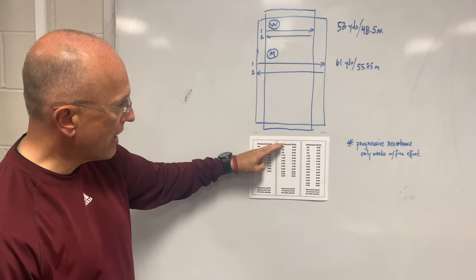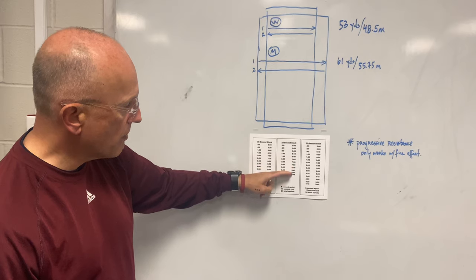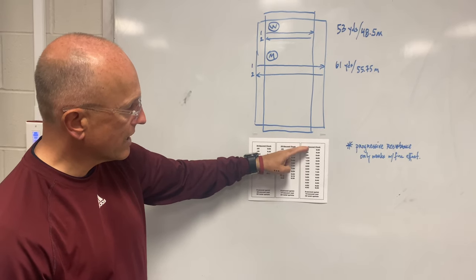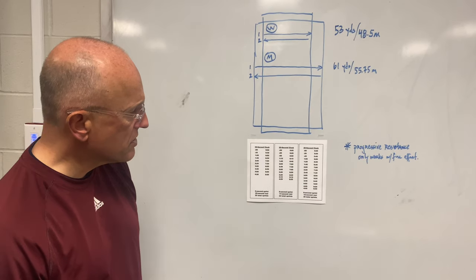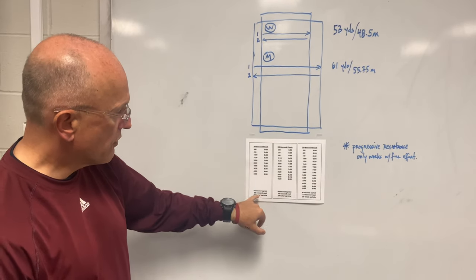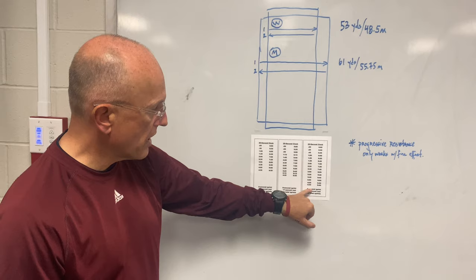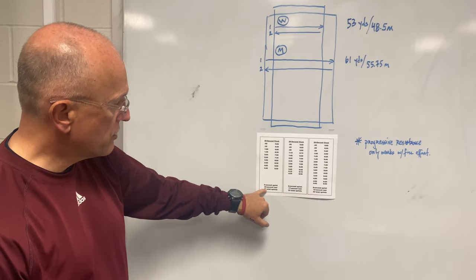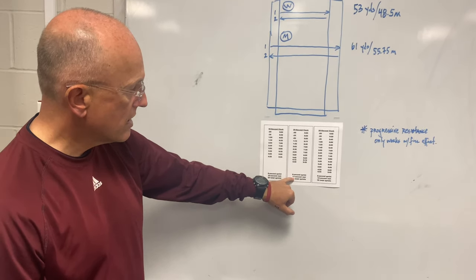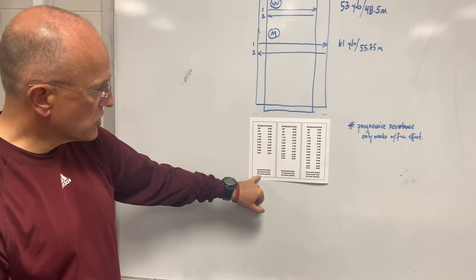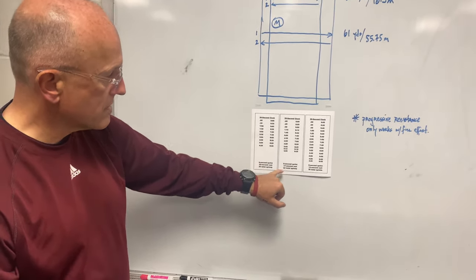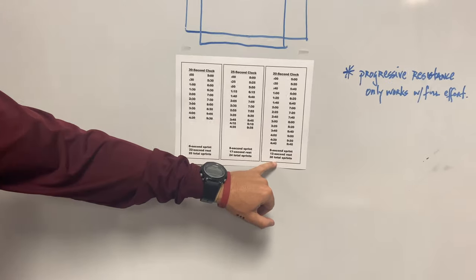So over the course of the summer, your job is to do the best you can on a 30 second clock. Once you get to 10 minutes, you go to a 25 second clock, do the best you can work your way back to 10 and then go to a 20 second clock, do the best you can and start adding minutes until you get back to 10 minutes.